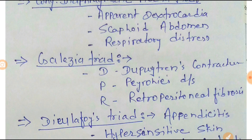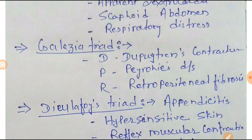Next one is Garrod's Triad. The trick is DPR: D for Dupuytren's contracture, P for Peyronie's disease — which is a disease of the penis — and R for retroperitoneal fibrosis.